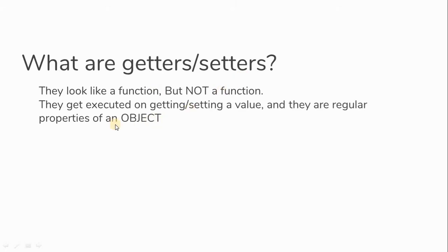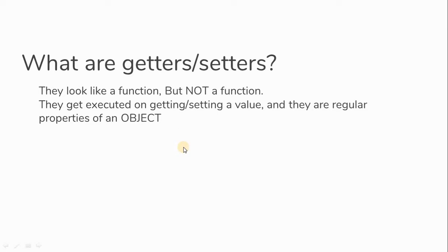So what are getters and setters? They get executed on getting or setting a value, and they are regular properties of an object. Getters and setters are associated only with an object. Their behavior is based on whether you are getting a value or setting a value. They may seem the same, but the functionality differs. Make sure to remember — they are properties of an object.